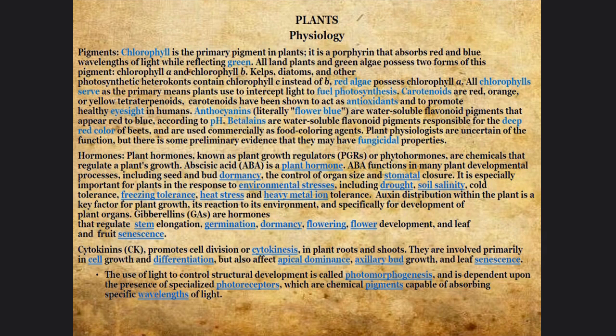Another important factor is that plants have hormones. Some hormones promote cell growth, like the phytohormones. Then you also have ABA, which is for developmental processes like seed and bud dormancy. They also control organ size and stomatal closure, as we saw earlier in the chemical diagram showing which ions and compounds promote which phenomena in plants.